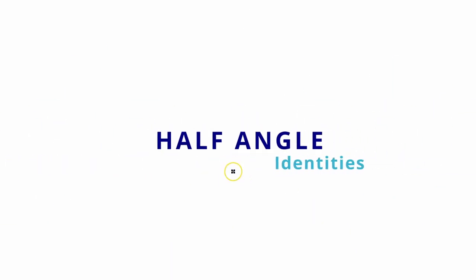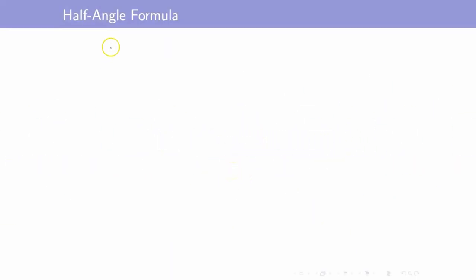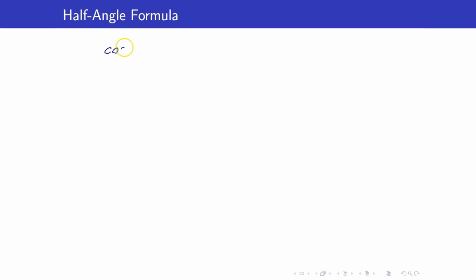In this lesson, we are going to discuss half-angle identities. Let us first recall our double-angle identity for cosine, which involves sine. That is: cos 2θ = 1 minus 2 sine squared theta.